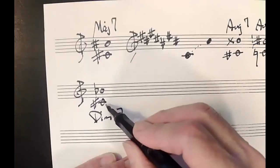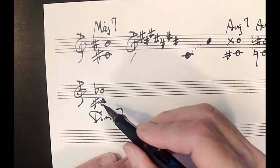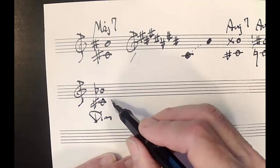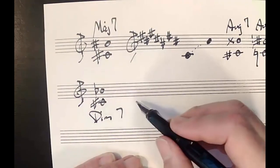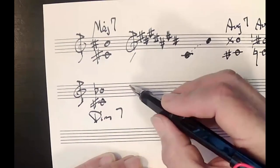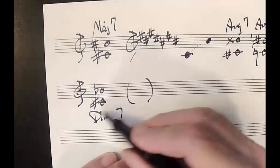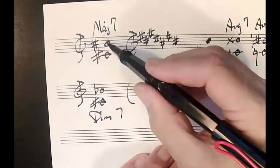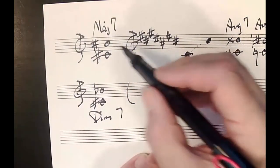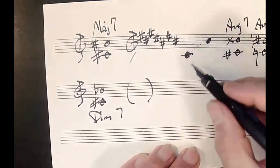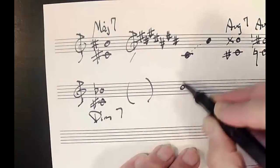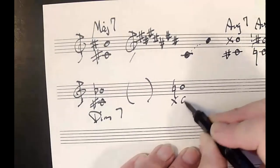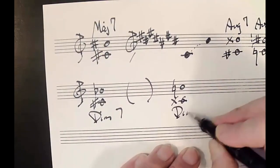Trying to raise the floor two half steps from C sharp would require C double sharp and then C triple sharp, which we really don't do in notation. So instead, we use the split method: lower the ceiling one half step — B sharp becomes B natural — and raise the floor one half step — C sharp becomes C double sharp — and that combination gives a diminished seventh.